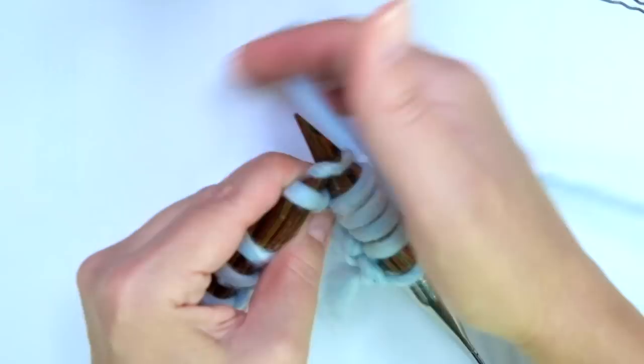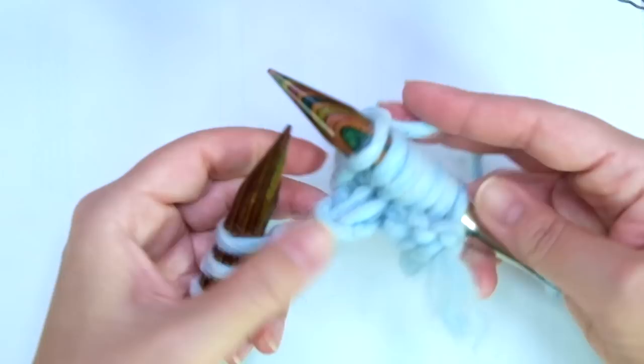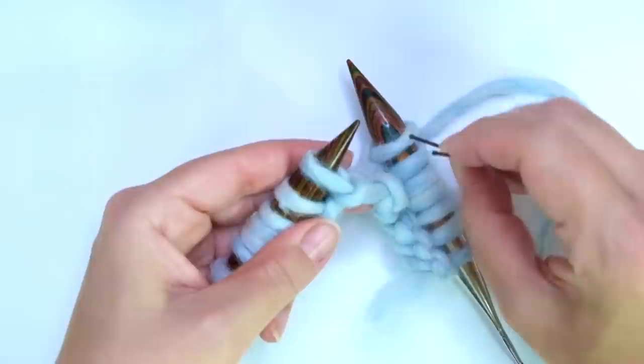And now bring them back. I am going to place them back onto the left hand needle. And knit both of them. That's it. That's the repeat.